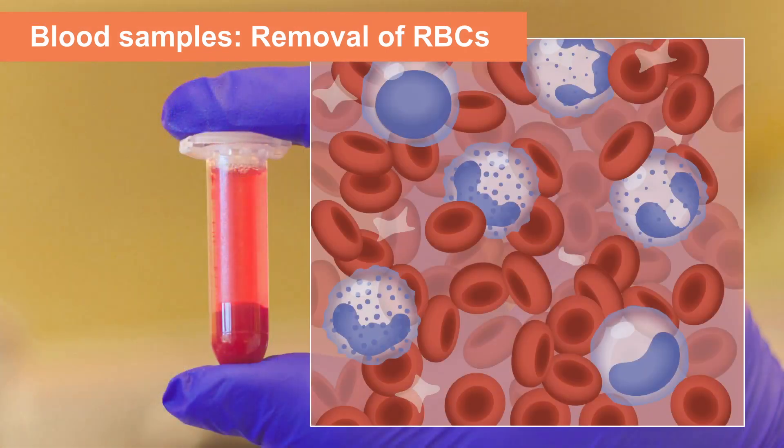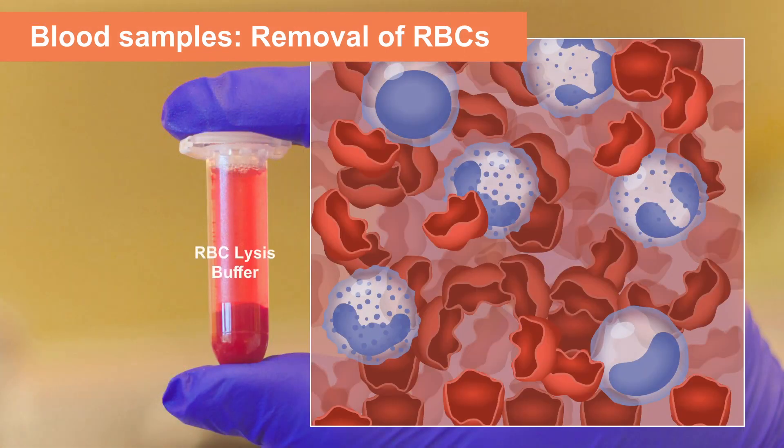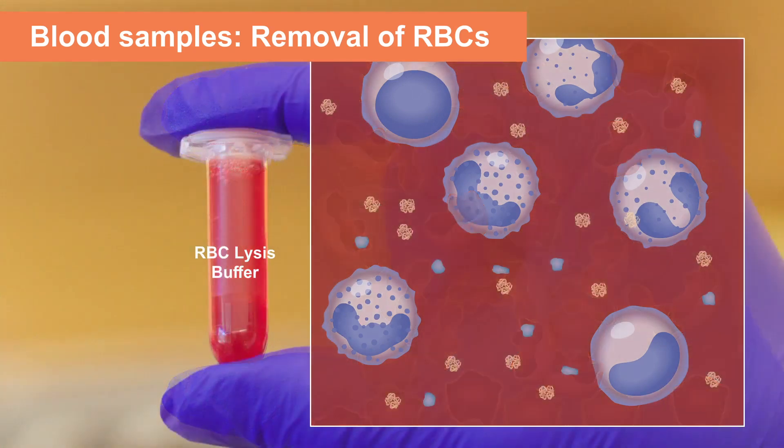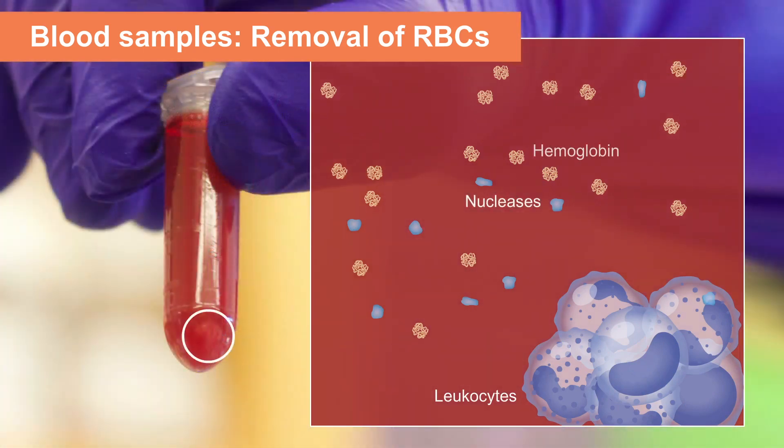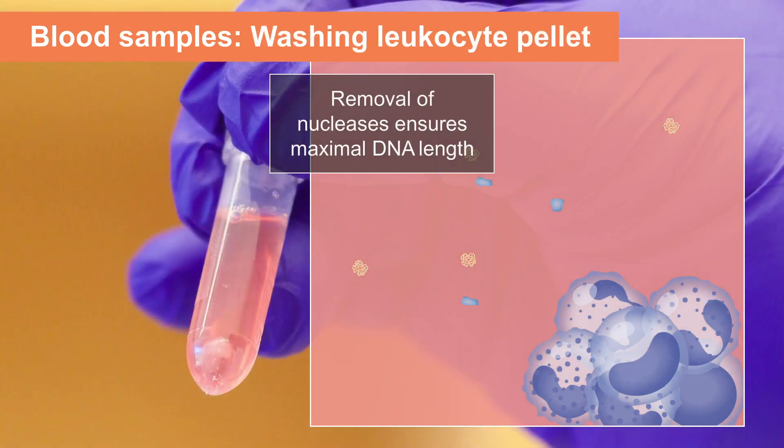Red blood cells are first lysed with the RBC lysis buffer, and their contents are released into the lysate. Leukocytes remain mostly unharmed by the RBC lysis buffer and are collected by centrifugation to separate them from the hemoglobin. After two wash steps, a clean pellet of leukocytes can be further processed using the cell protocol.